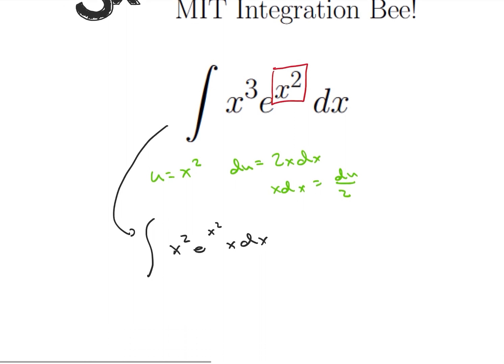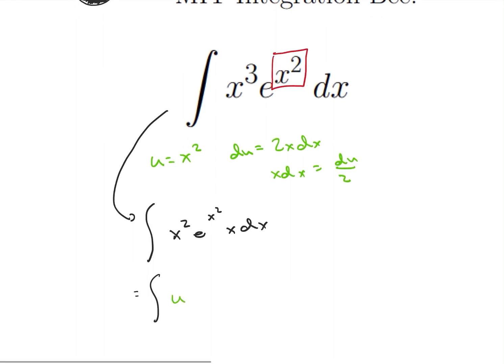So what's going to happen here is I have the integral of x squared is just u. Then I'm going to have e to the u. And then I have times du divided by 2. So this becomes a pretty basic integral.